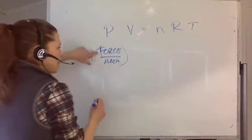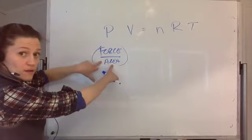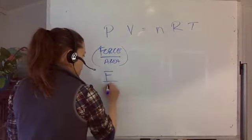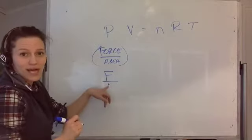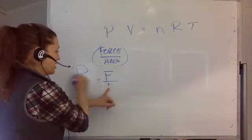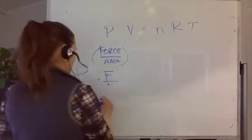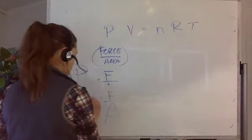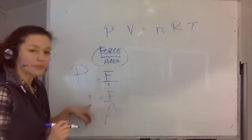Okay. Area gets small. A is tiny. F over A. Small A equals big pressure. Same force over very large A. Little pressure.